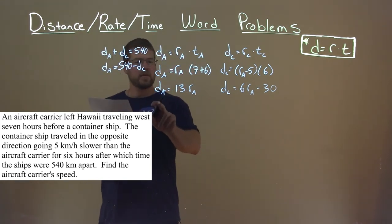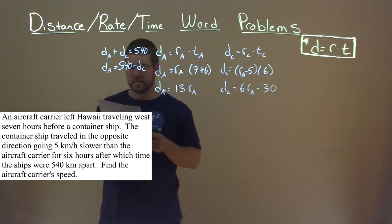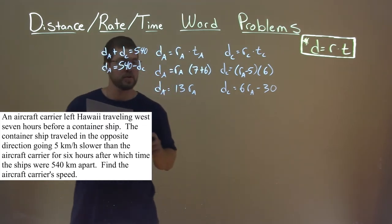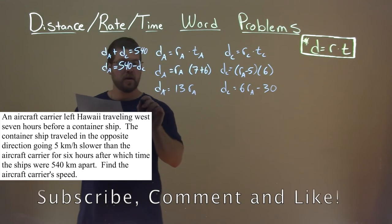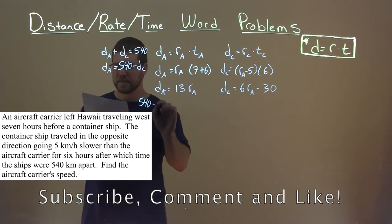Okay, well they tell us here that D sub A is equal to 540, or we found 540 minus D sub C. So let's try to get things in similar terms. Let's replace that: 540 here minus D sub C is equal to 13 R sub A.